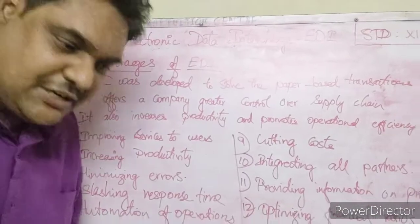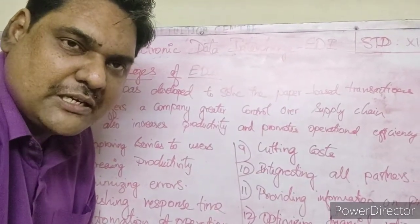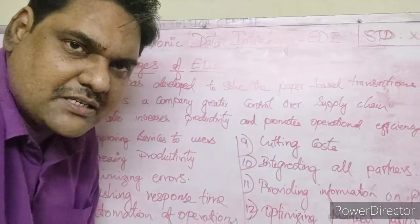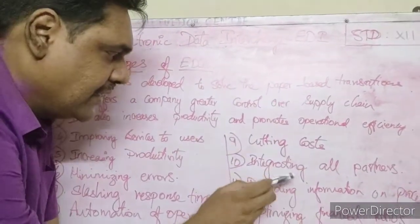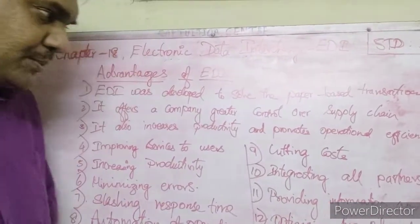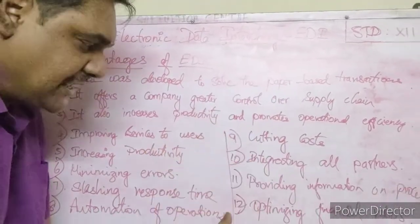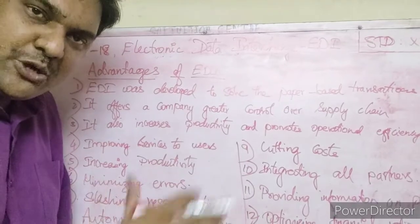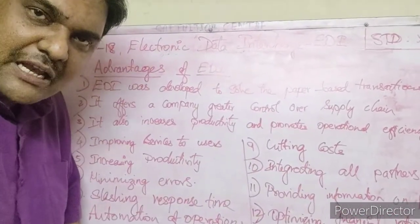Next advantage: cutting cost. Initially there is a cost to establish the network, and if you use value-added networks there is a charge, but overall costs are reduced. Also, safely and securely integrating all partners — business partners can be grouped together. Providing information on process status becomes easier. Optimizing financial ratios — profit and loss ratios — through ratio analysis is also a benefit of EDI.